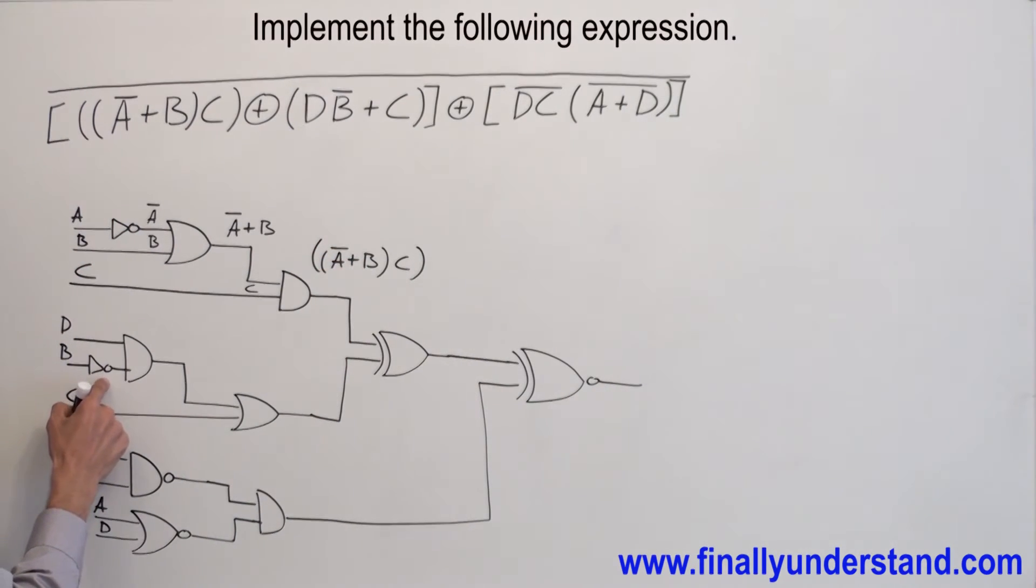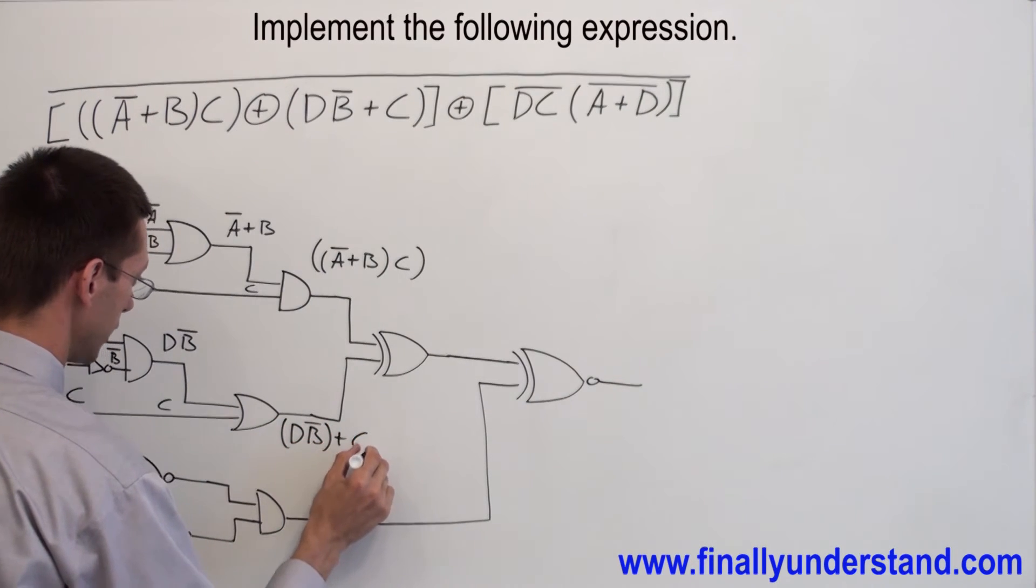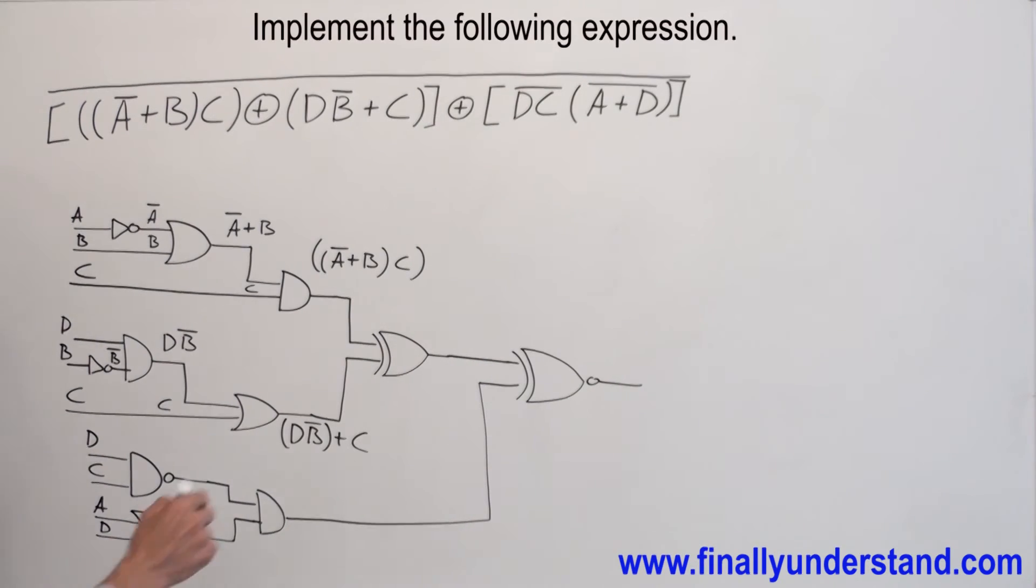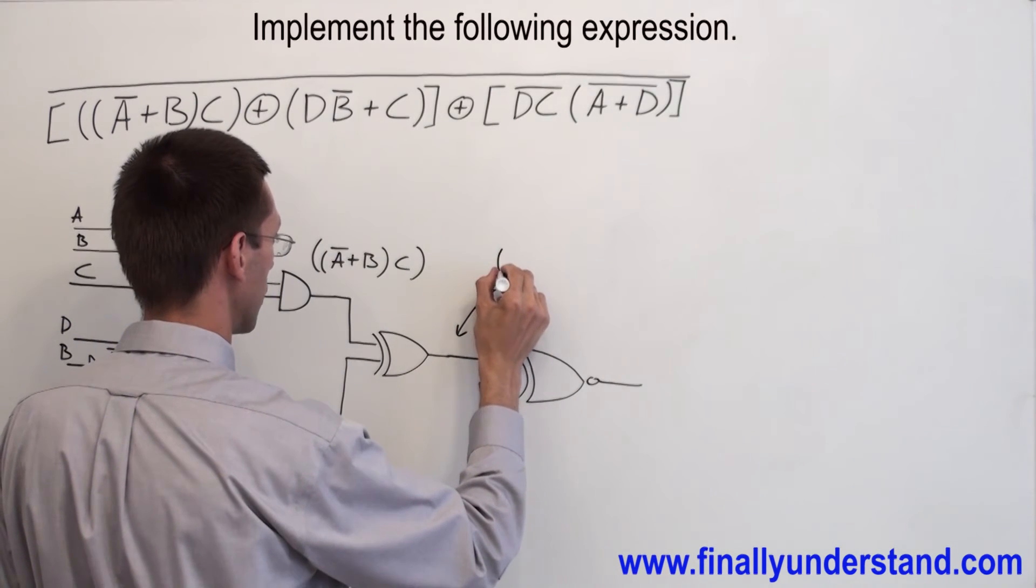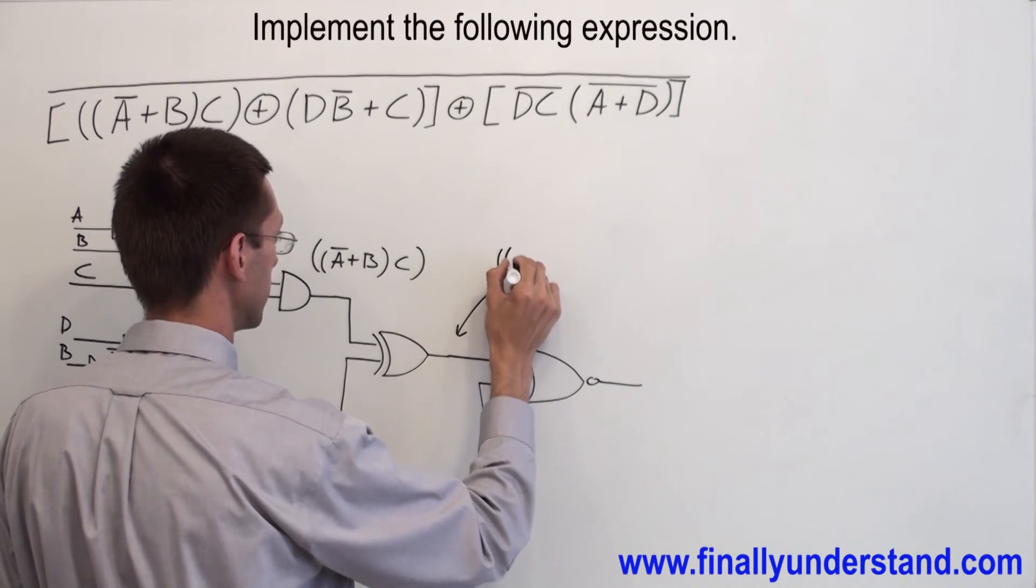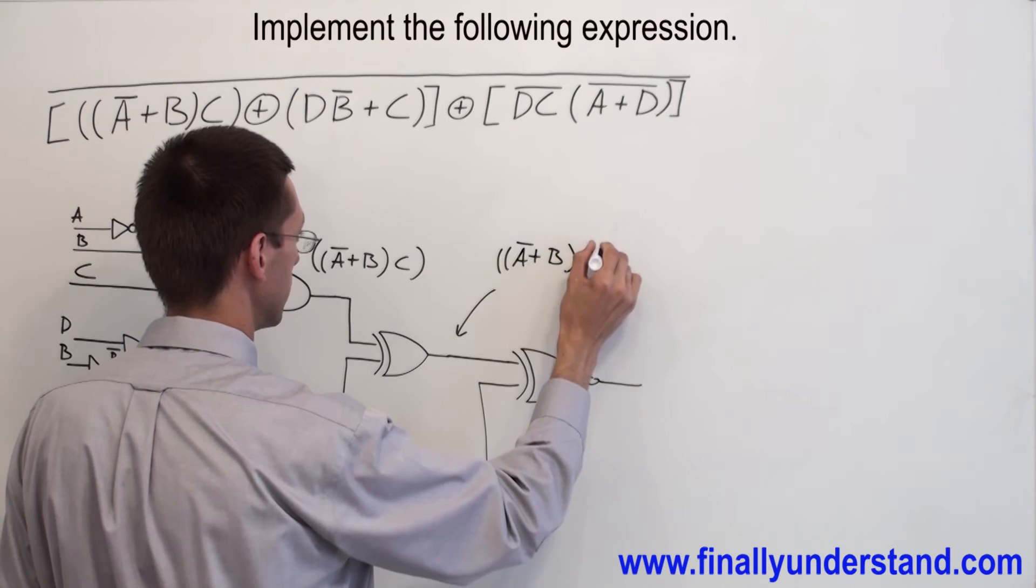Now let's take a look at what we are going to have over here. I have D times B bar and I have C. I have D, B bar or C, and I'm going to have over here, open parenthesis, A bar or B ANDed with C.